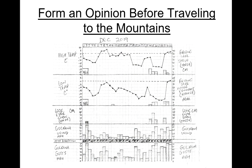Before heading out to the mountains, we want to form an opinion about what's happening out there. We're going to watch long-term weather trends. If we operate in the eastern Alaska Range in areas that don't have a forecast, we have to do a lot of this on our own. Keeping a snow or weather journal can be extremely helpful. We're looking for extreme weather: extreme winds, melt-freeze cycles, rain on snow, long cold periods followed by snowstorms. If there are observations or forecasts, that's valuable information. Also talk to fellow mountain travelers who may have been out recently.